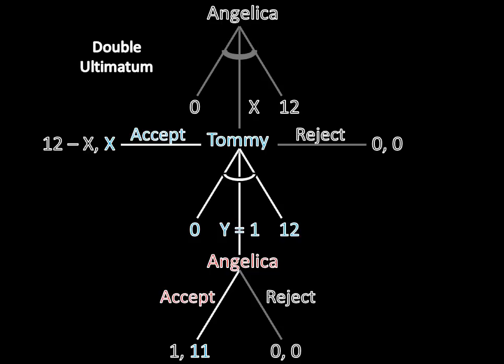So let's see if Angelica will offer 12 or not. Well, Tommy would accept in this case because 12 is greater than 11. But Angelica really doesn't like that outcome because she gets nothing out of it. She'll get zero cookies. Thus, she will not offer 12 cookies to Tommy.